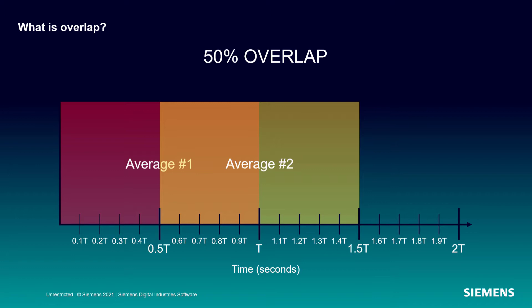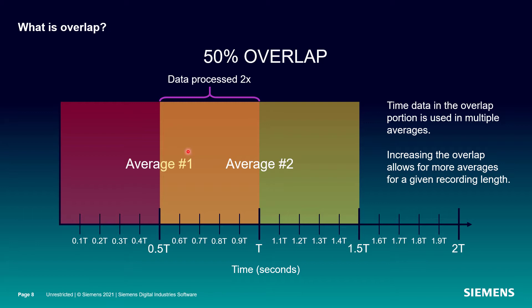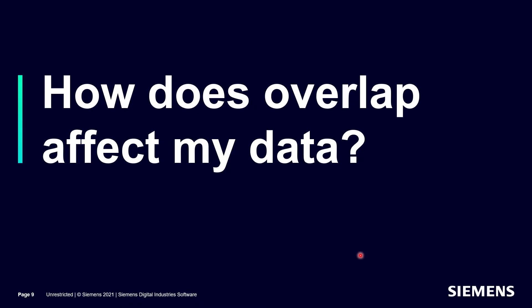Now it's important to notice that this data in this orange section here actually gets processed twice. It belongs to average one as well as average two. Also noteworthy is that I get two averages and I only need 1.5T worth of time data. By overlapping, I use less time data to get the same number of averages.